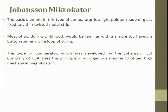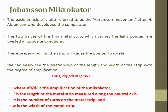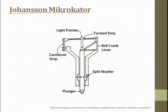Next we will see the Johansson micro comparator. The basic element of this type of comparator is a light pointer made of glass, fixed to a thin twisted metal spring. Most of us during childhood would be familiar with a simple toy having buttons spinning on a loop of a string — the same concept is used here. The basic principle is also referred to as Abramson movement, after H. Abramson who developed this comparator. The device has a twisted spring, a pointer, a bell crank lever, all attached to a plunger.